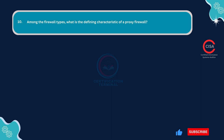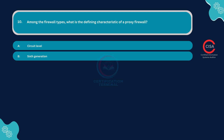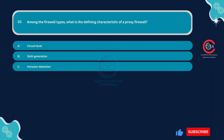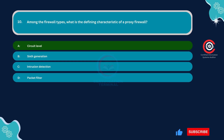Question number ten: Among the firewall types, what is the defining characteristic of a proxy firewall? Option A: Circuit level. Option B: Sixth generation. Option C: Intrusion detection. Option D: Packet filter. The correct answer is Option A — circuit level. A proxy firewall operates at the session layer of the OSI model and mediates communication between two network devices by acting as an intermediary.